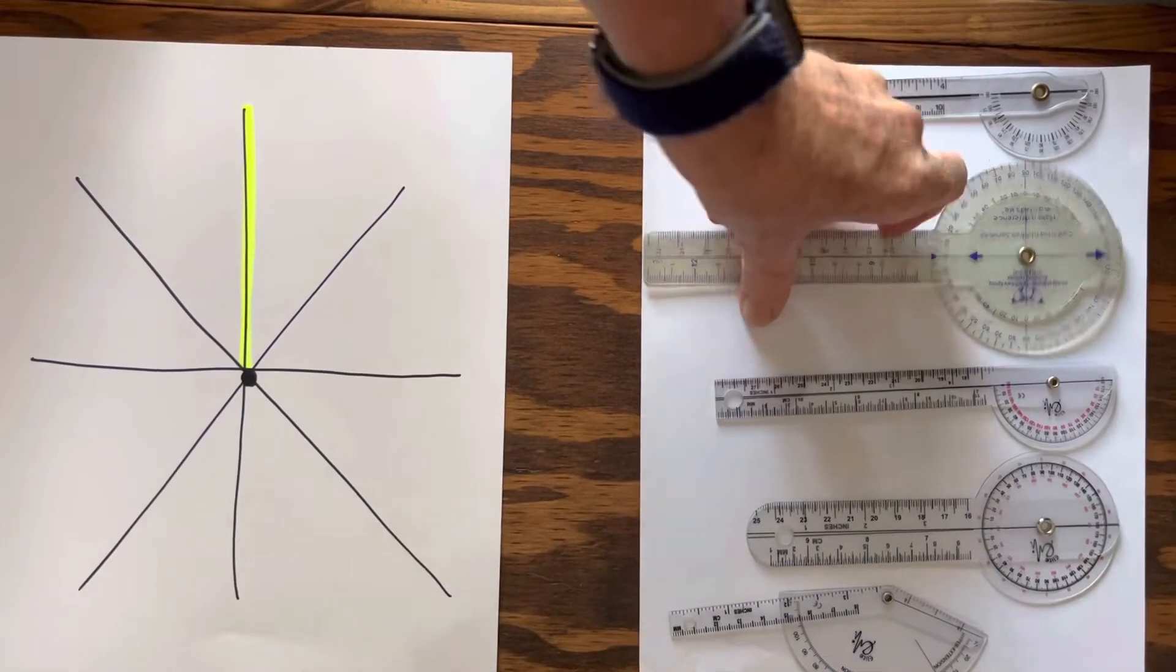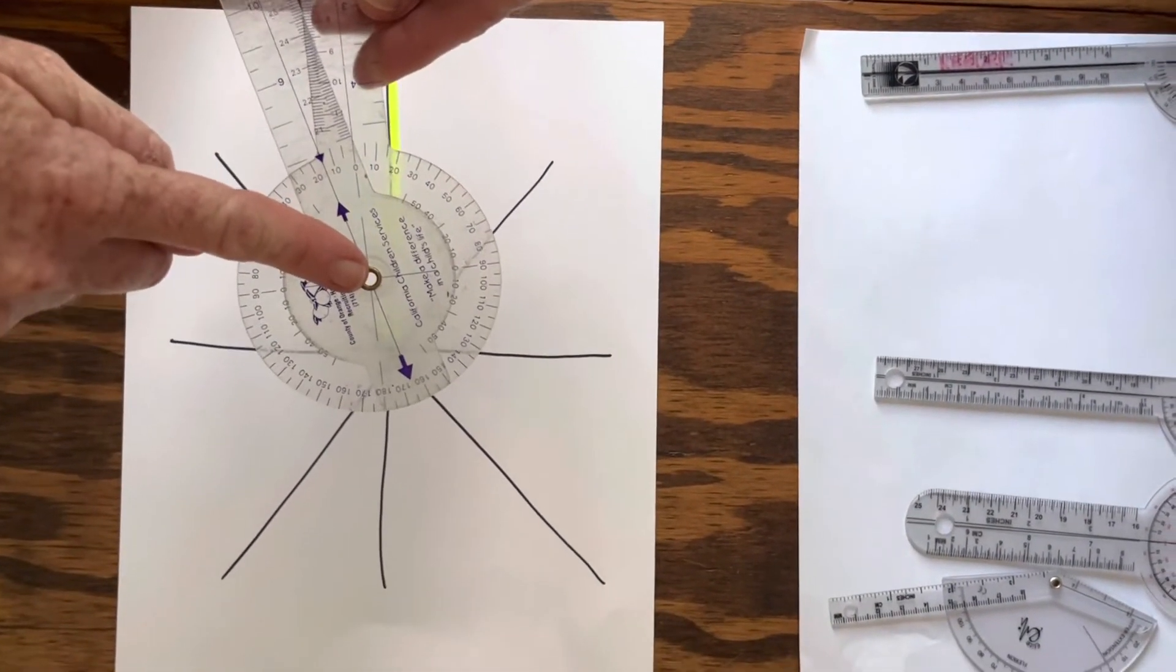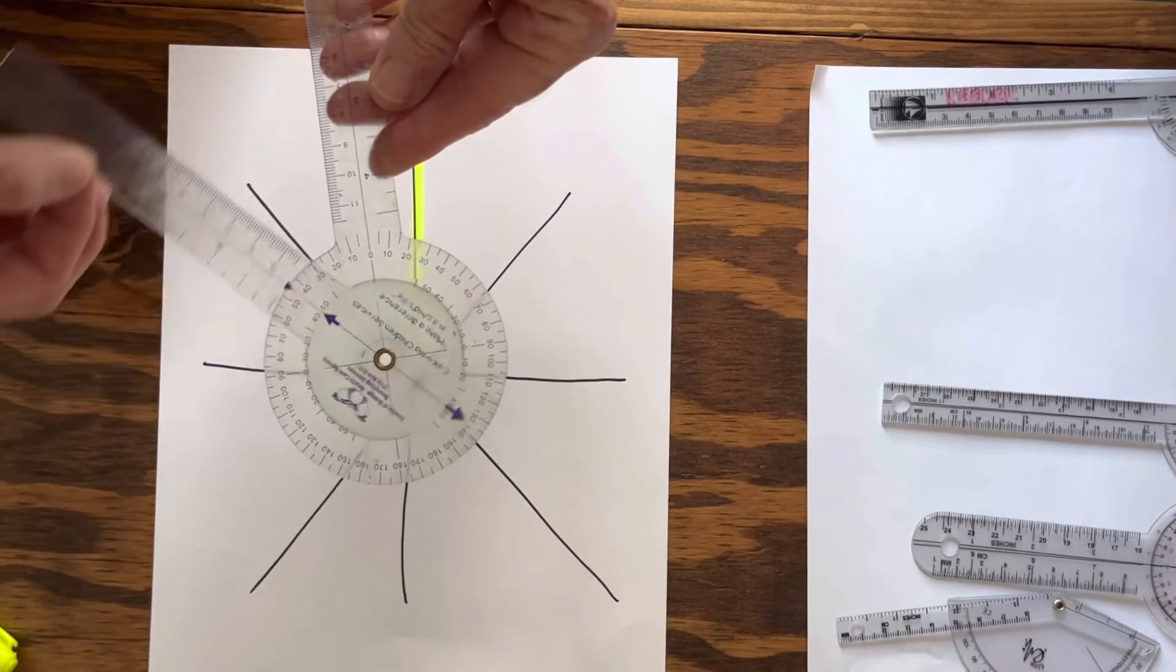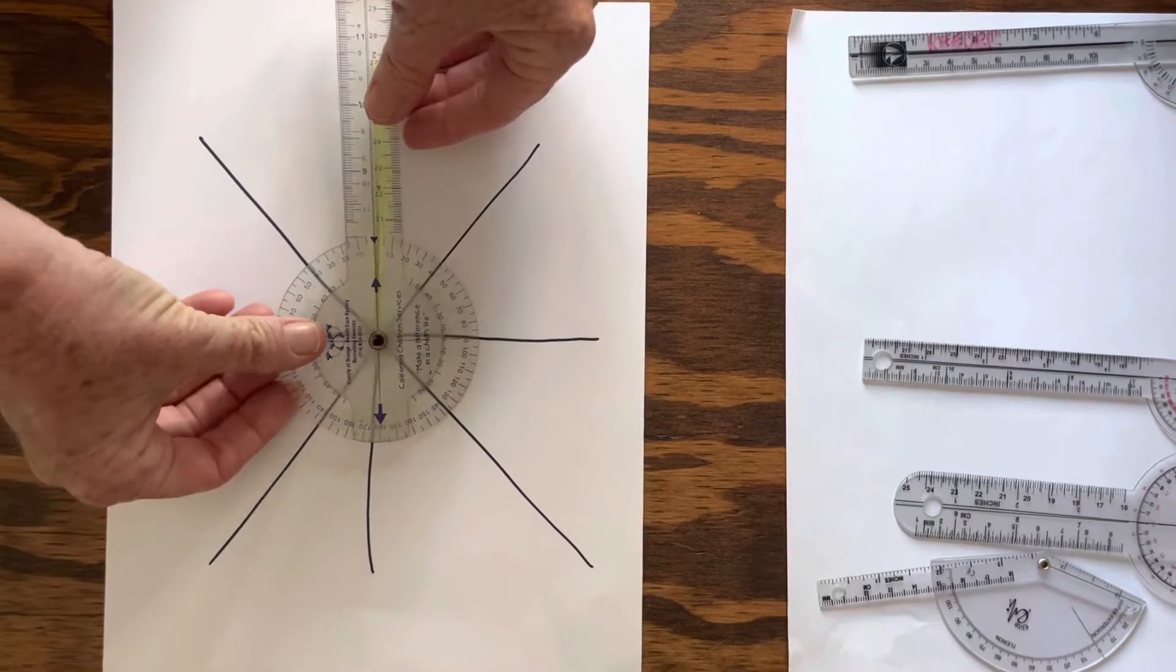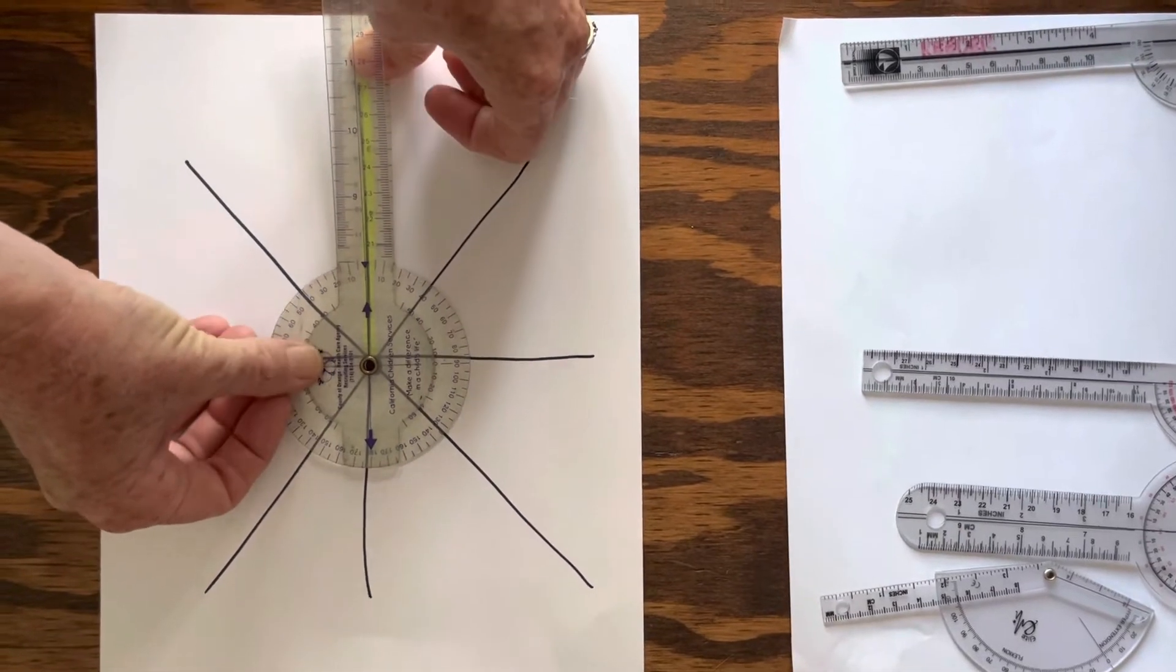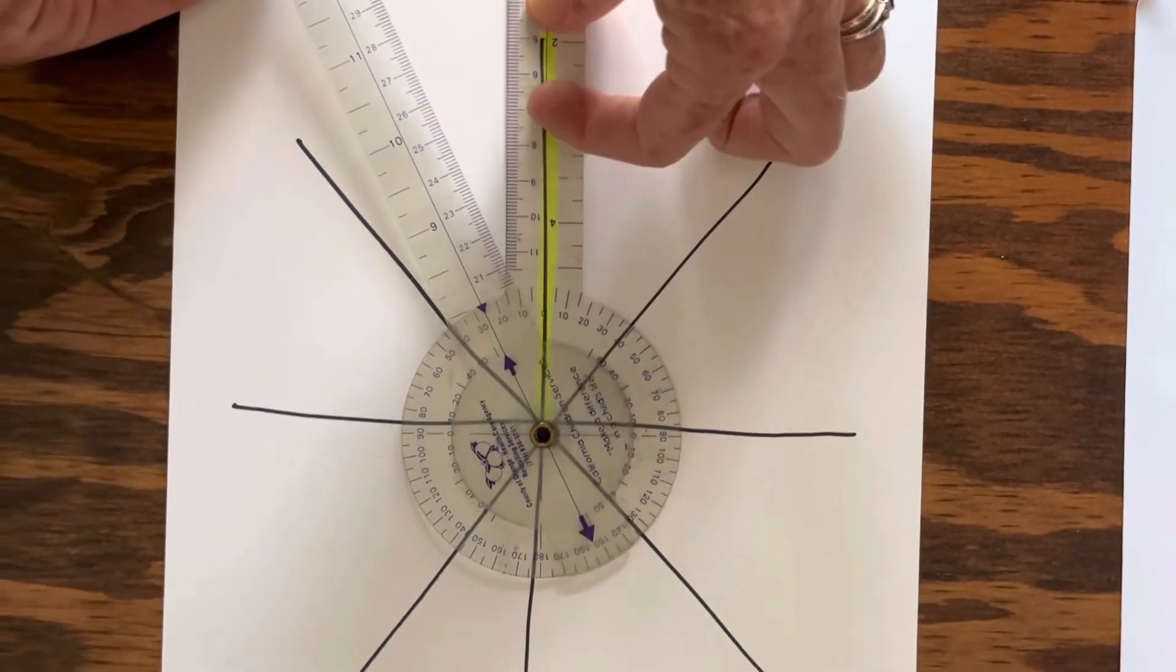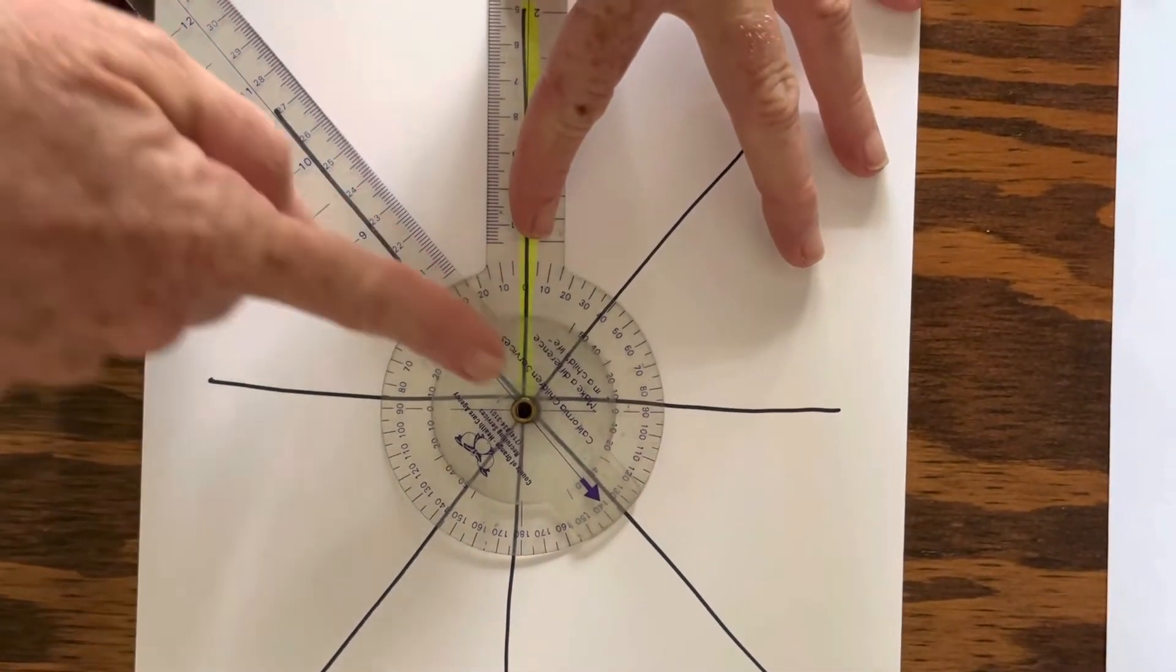Then you're going to take your goniometer, whichever one you want, and I have my access point, my stationary arm, and then my movable arm here on top. So I'm going to align the access point with that dot in the middle and the stationary arm down that highlighted line that I made, and then I'm going to move this movable arm. See how it rotates along the degrees? And I'm going to line it up with each line.